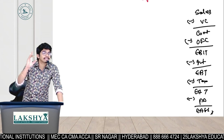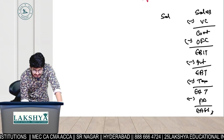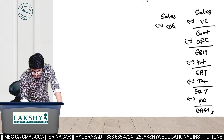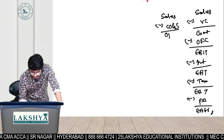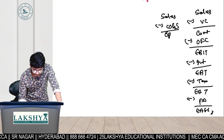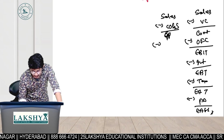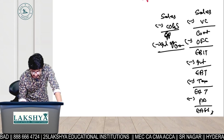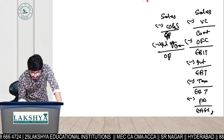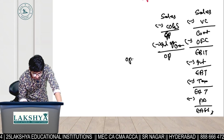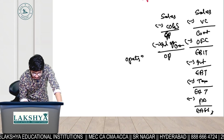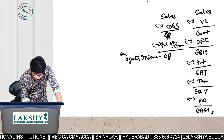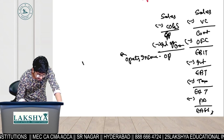In the ratio analysis format: Sales minus cost of goods sold gives gross profit; minus indirect operating expenses gives operating profit. Operating profit is also called operating income.